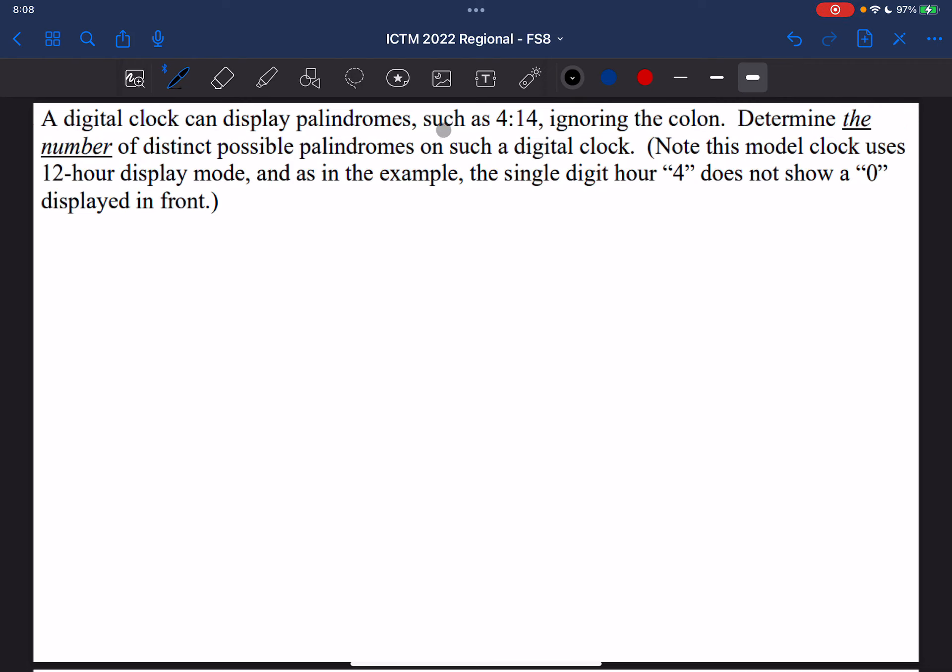A digital clock can display palindromes such as 4:14, as long as we ignore the colon. We want to determine the number of distinct possible palindromes on such a digital clock. So let's say we start at 1. Well, that means the last number is going to be 1.